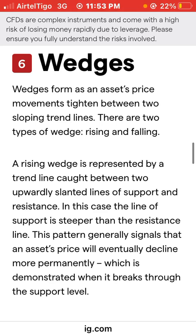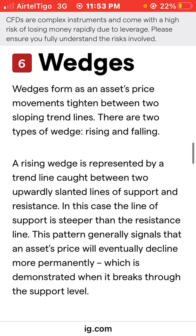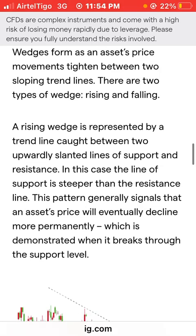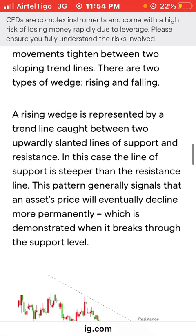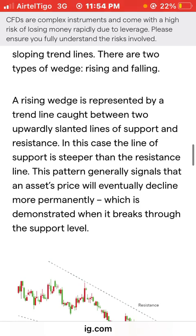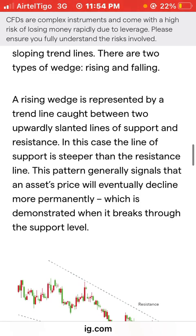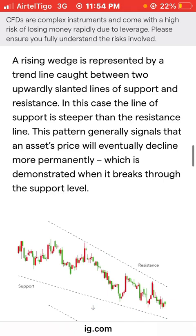There are two types of wedges: rising wedges and falling wedges. With a rising wedge you will see the price going up, and with a falling wedge the price movement will be coming down, tightening towards the downside. A rising wedge is represented by a trend line caught between two upwardly slanting lines of support and resistance.